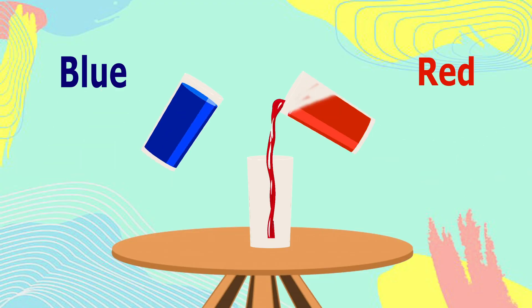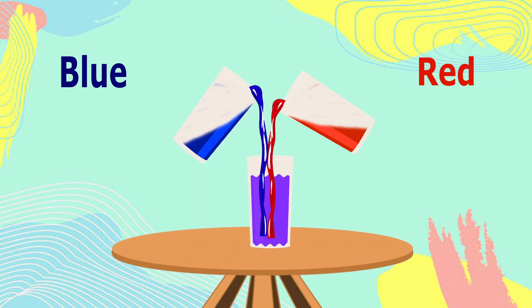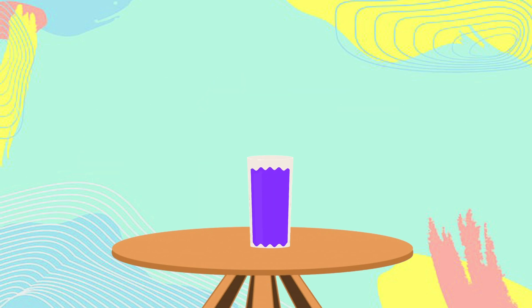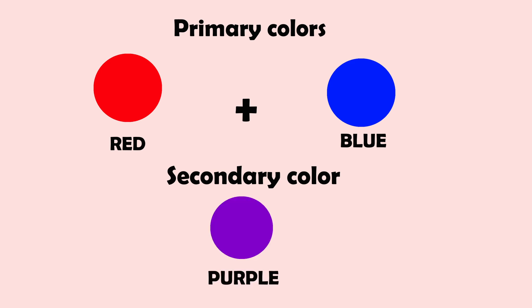Now, mix red and blue juice together. Wow, it becomes purple juice! When we mix two primary colors, red and blue, it becomes secondary color purple.